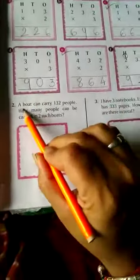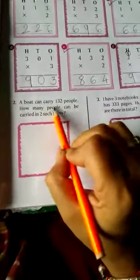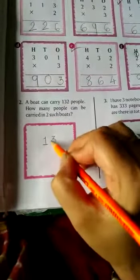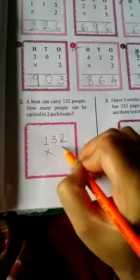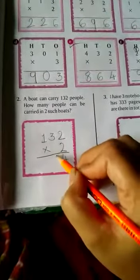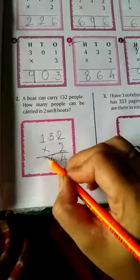Now here what problem? A boat can carry 132 people. How many people can be carried in two boats? So 132 multiply by 2. 2 twos are 4, 2 threes are 6, and 2 ones are 2.